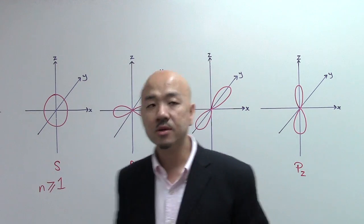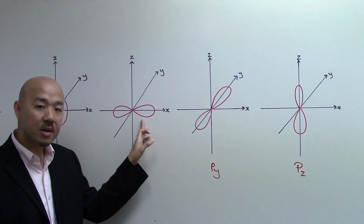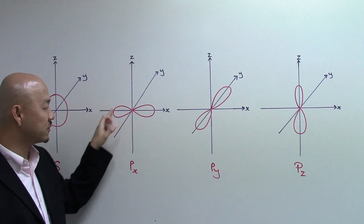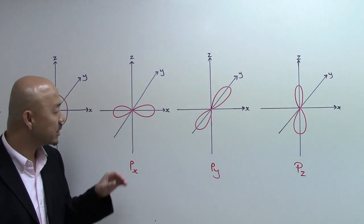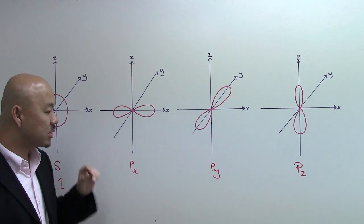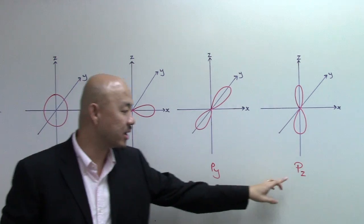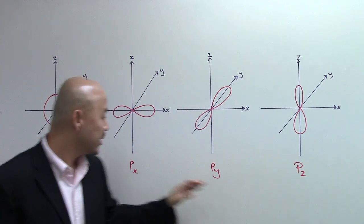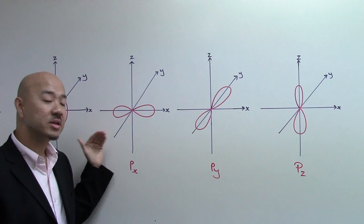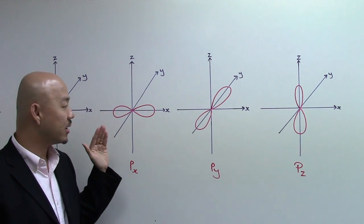P orbitals have a dumbbell shape made out of two lobes. This is the region where you can find the electrons. There are actually three types of P orbitals known as Px, Py, and Pz. They are equal in energy level. The only difference between them is the direction where they are facing.